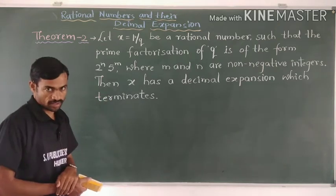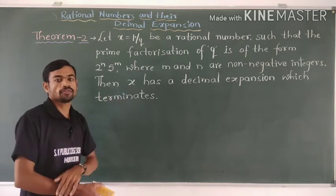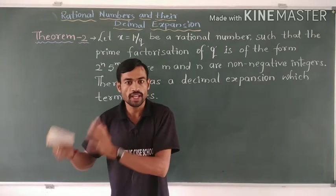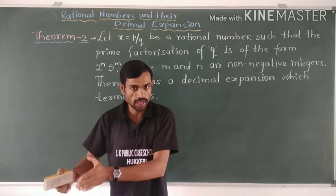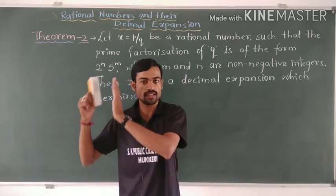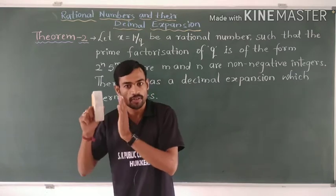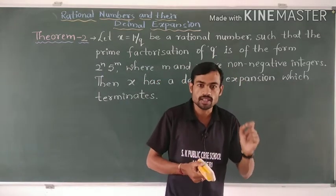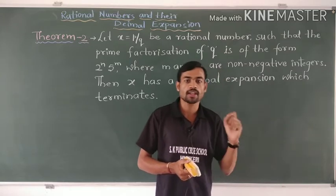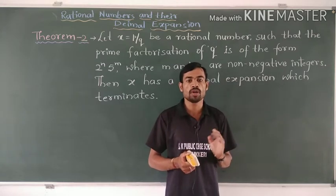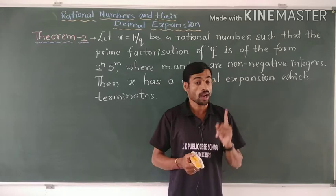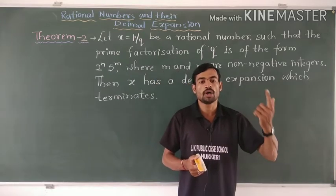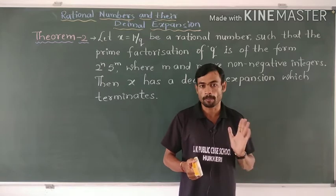What does Theorem 2 state? It is totally the converse of Theorem 1. In Theorem 1, x is a rational number whose decimal expansion terminates. Then we need to prove that x can be expressed as P by Q form where P and Q are co-primes, and the prime factorization of Q is of the form 2 to the power n into 5 to the power m. That we need to prove.